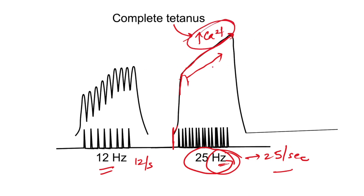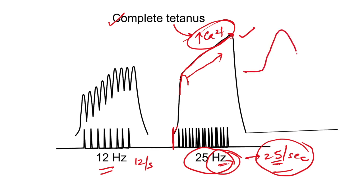In which case is the height of contraction greater? Obviously in complete tetanus, because there is much more calcium in the sarcoplasm. Complete tetanus is a state of sustained contraction of muscle. To determine the frequency needed, consider a simple muscle twitch: suppose the contraction period is 40 milliseconds and the relaxation period follows after.